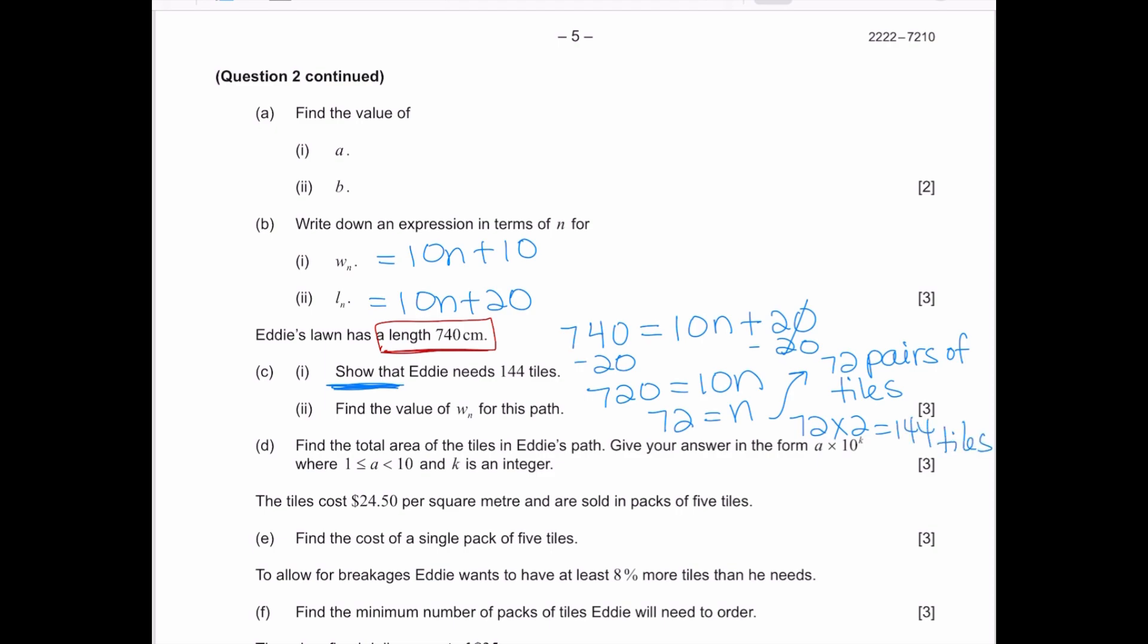You're not done with a show that question until you get exactly the answer that they want, which in this case is to show that he needs 144 tiles. So if you had ended at 72 without explaining that that means 72 pairs of tiles, you would not have gotten that final point.